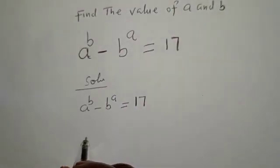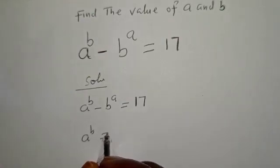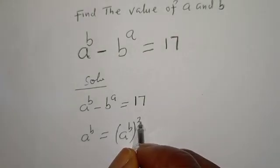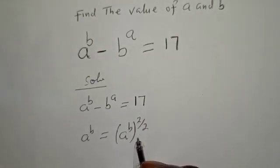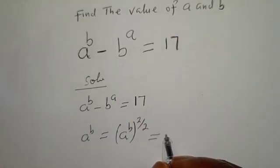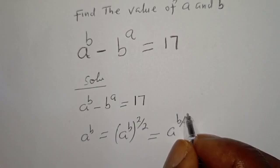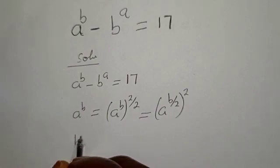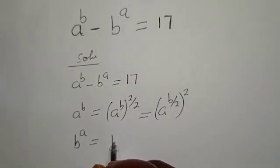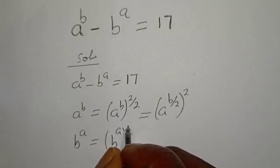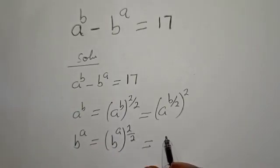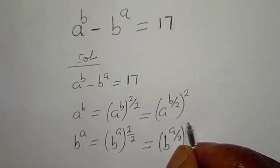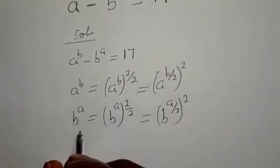Take note that if you have A raised to power B, this is equal to A raised to power B to the power of 2 over 2, which equals A raised to power B over 2, squared. Similarly, B raised to power A equals B raised to power A over 2, squared. That is from this exponent rule.